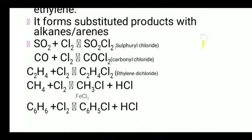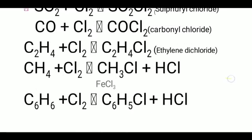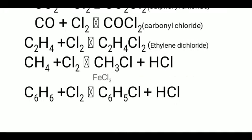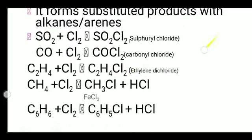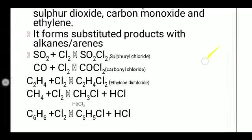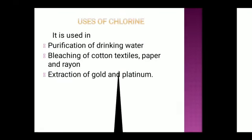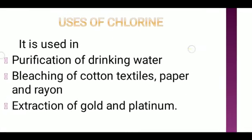Chlorine forms substituted products with alkanes and arenes. For example, with methane (alkane): CH4 plus Cl2 gives CH3Cl plus HCl. With benzene (arene): C6H6 plus Cl2 gives C6H5Cl (chlorobenzene) plus HCl, in the presence of FeCl3 catalyst.